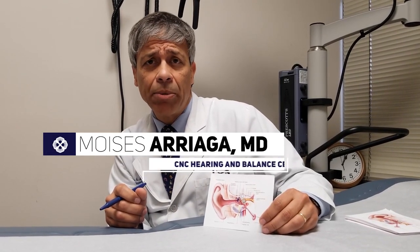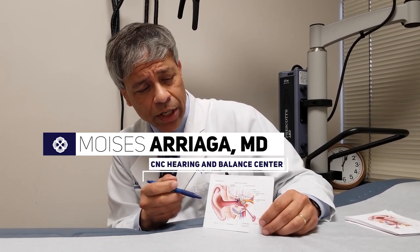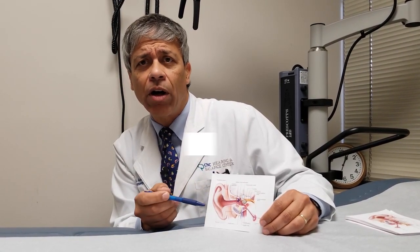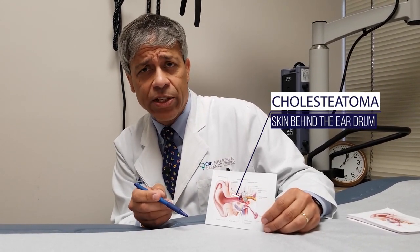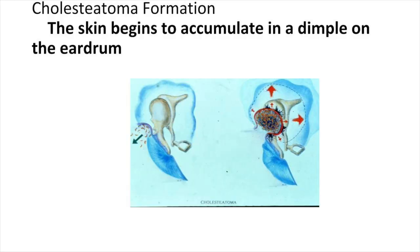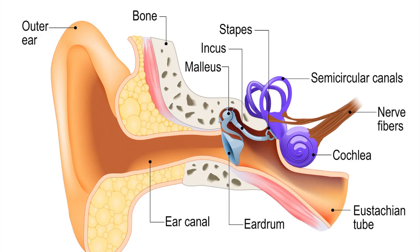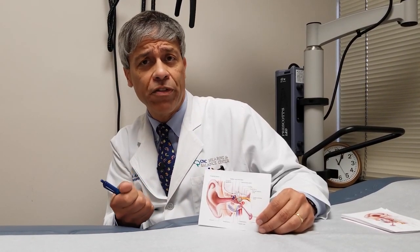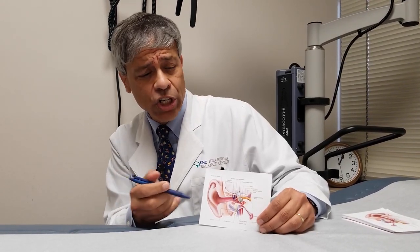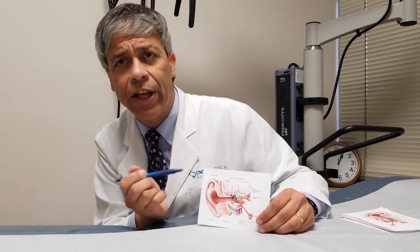Sometimes chronic infections of the ear or problems with the eustachian tube can create a skin cyst on the ear. We call those skin cysts cholesteatomas. These are not tumors, these are not cancers. This is normal skin of the ear canal and the eardrum that has accumulated behind the eardrum. The problem is that skin can dissolve the hearing bones and dissolve back into the mastoid bone, and even create problems with the nerve that moves the face, go into the inner ear, or even extend towards the brain area right above the ear.